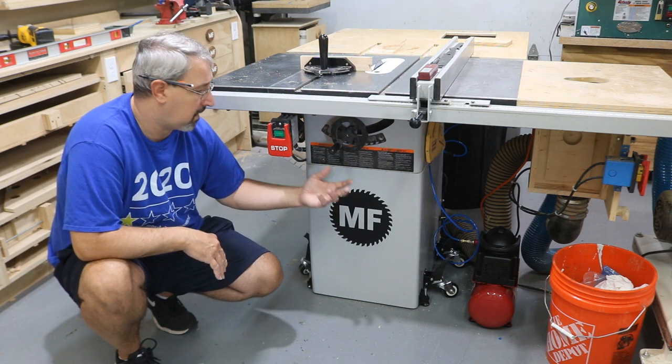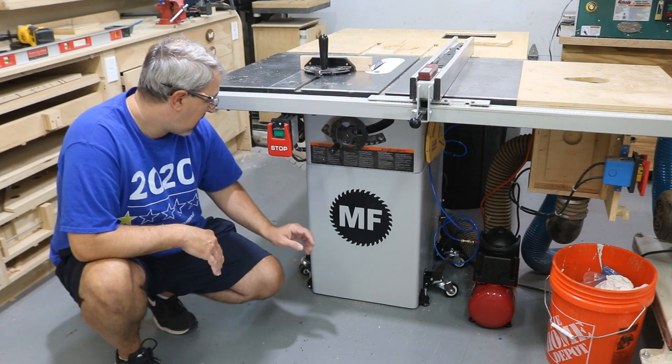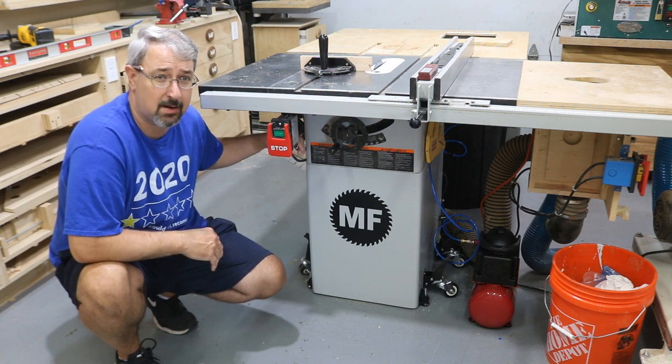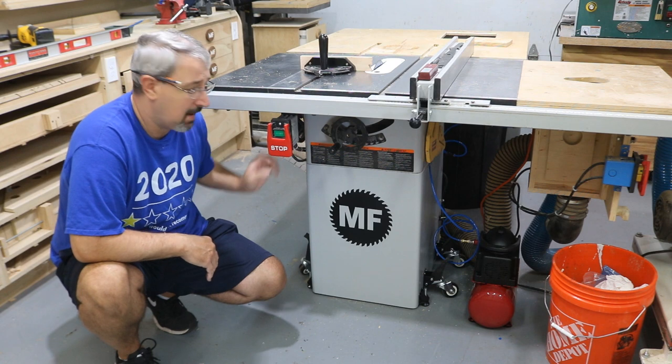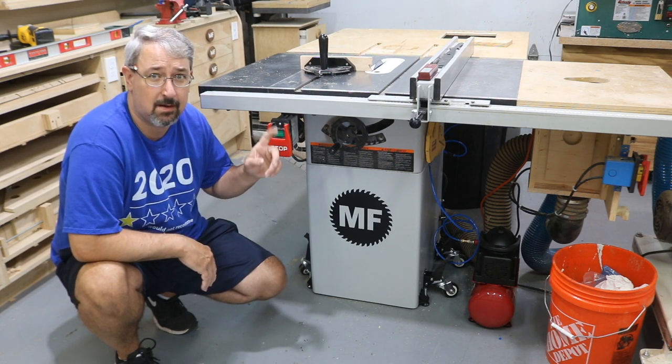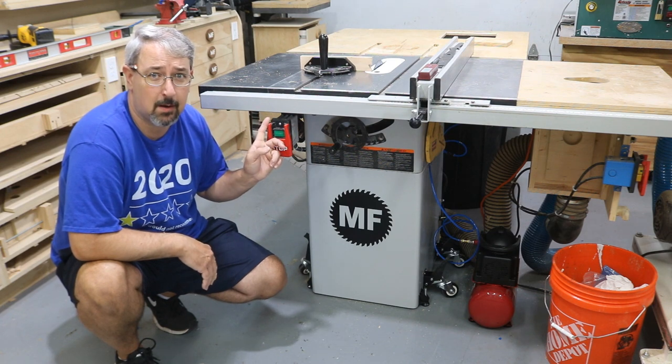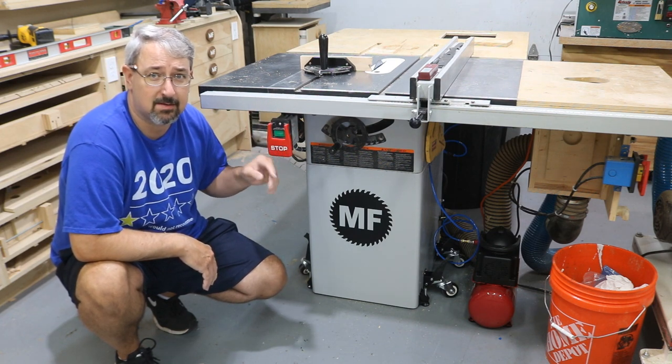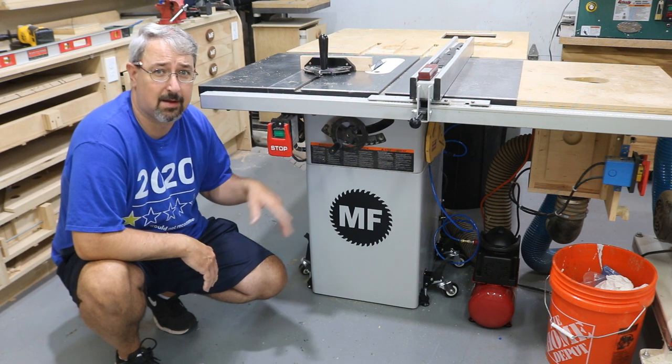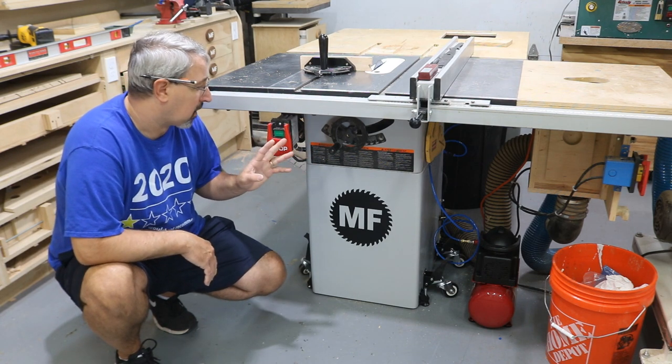On the back side, I got the pneumatic actuator to run the blast gate, and that runs right up to the switch. So I turn this switch on, the saw comes on, the blast gate opens, I make my cuts, I shut the switch off, the saw shuts off, and the blast gate closes. And that's working really well.